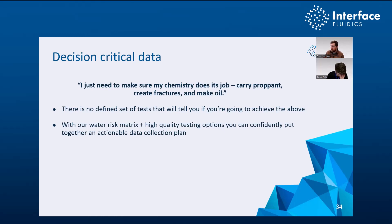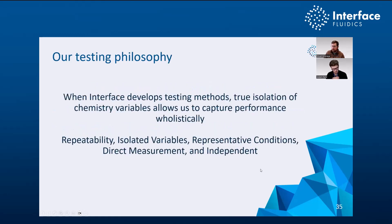At Interface, when we develop testing methods we're creating true isolation of chemistry variables to understand and capture the performance of your fluid package — with holistic repeatability, variable isolation, representative conditions, and direct measurement as must-haves. We maintain independence of outcomes. We have three tests primarily focused on the problems discussed today. The first is our flowback test — a highly repeatable process for holistically testing your full fluid package, giving us the ability to look at chemical compatibility, water compatibility, and oil compatibility all in one test. It is the only way to get nano-Darcy flow through porous media testing to truly understand formation damage, all at pressure and temperature.